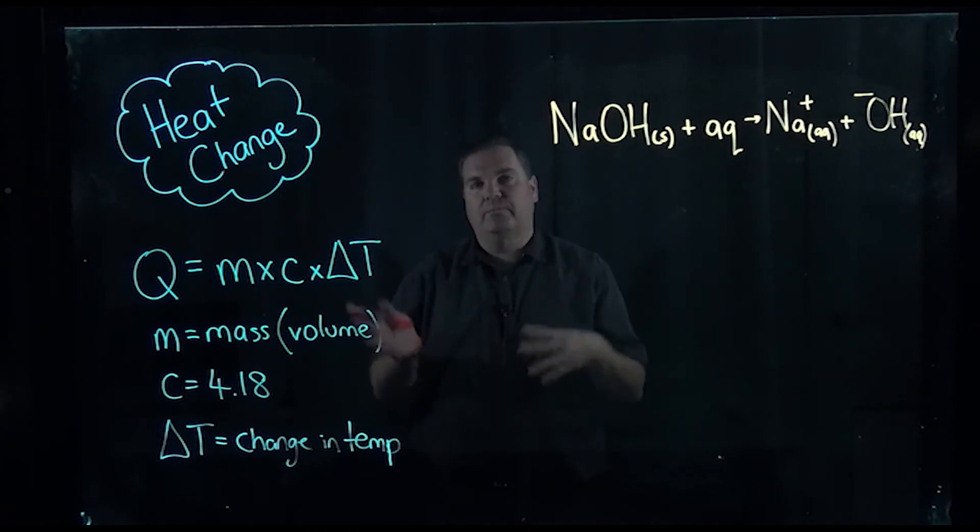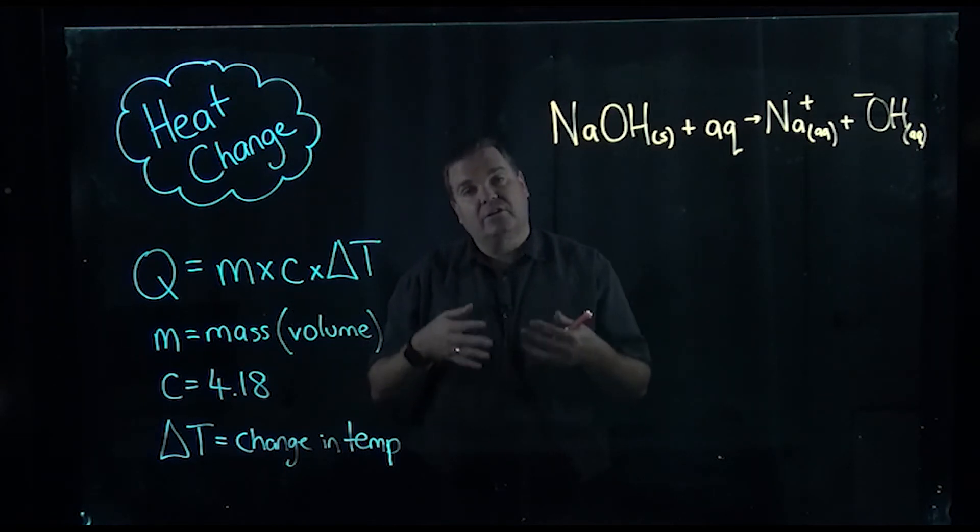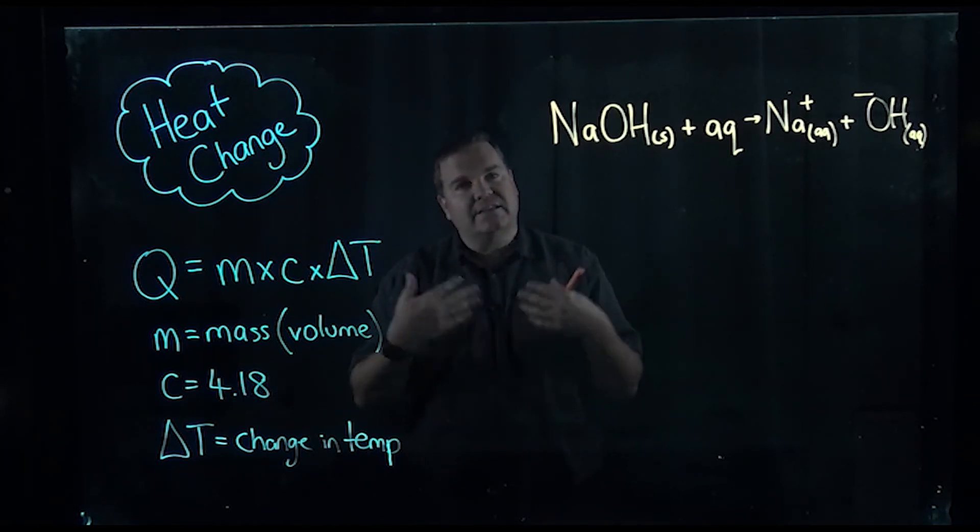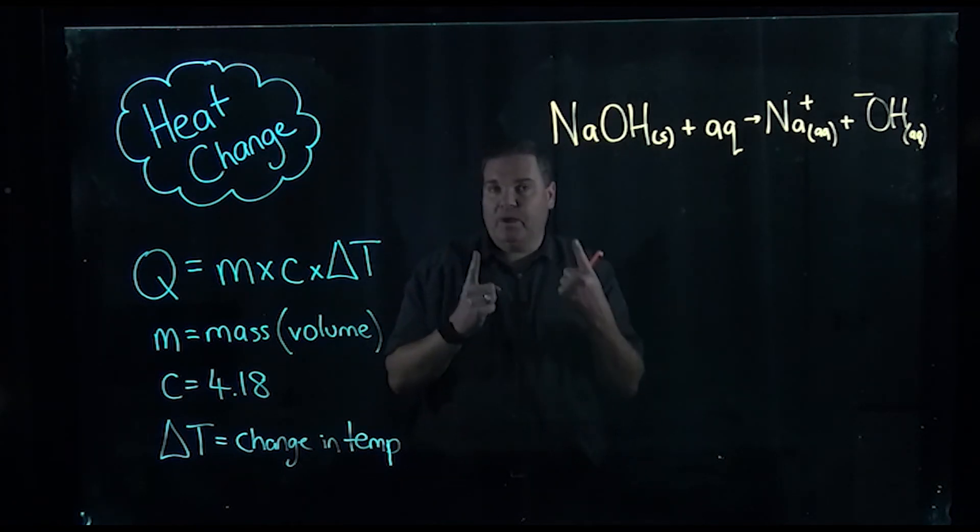C is called the specific heat constant. For this we're going to use the specific heat capacity of water which is 4.18. So what that says is that it takes 4.18 joules of energy to raise 1 mil of water by 1 degree, and that's a constant.